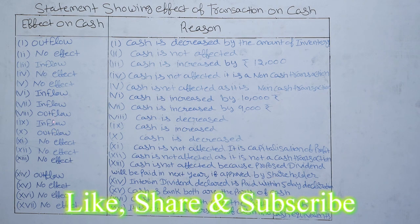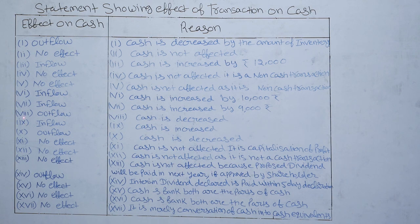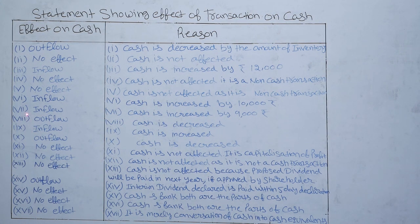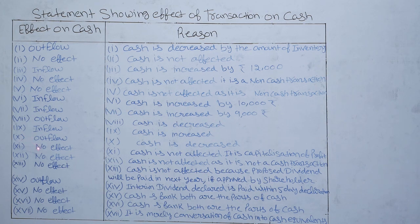For the eighth item — cash paid to trade payables — there is an outflow of cash. Reason: cash is decreased. For the ninth item — shares issued for cash — we receive cash, so there is inflow. Reason: cash is increased. For the tenth item — buyback of equity shares — we pay cash to buy back shares, so there is outflow. Reason: cash is decreased. For the eleventh item — issue of fully paid bonus shares — this is a non-cash transaction. Reason: cash is not affected; it is capitalization of profit.